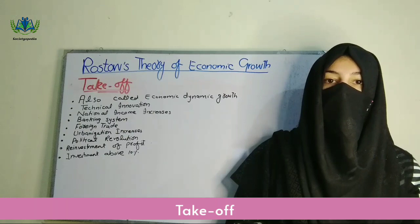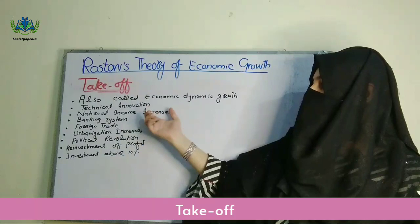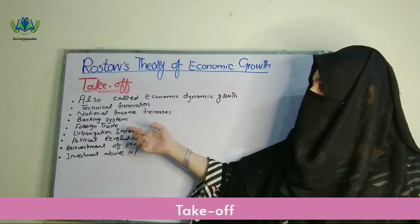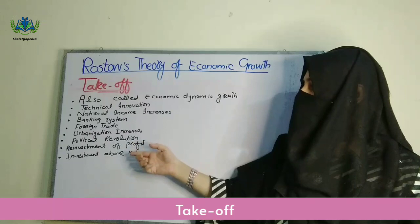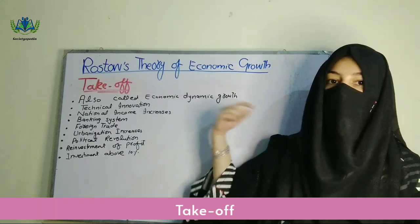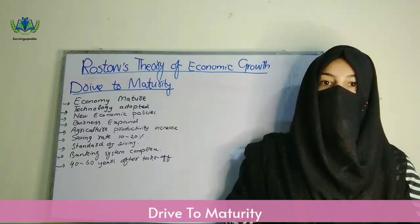The next stage is take-off — an important stage in economic growth. According to Rostow, in this stage there is intensive growth in the economy; we also call it the economic dynamic growth stage. Technical innovation is introduced, national income increases, the banking system is further improved, foreign trade starts, demand for the country's products increases, and entrepreneurs or industrialists reinvest profits. Urbanization increases, a political revolution occurs — meaning a social and political environment conducive to the economy — and investment goes above 10%.